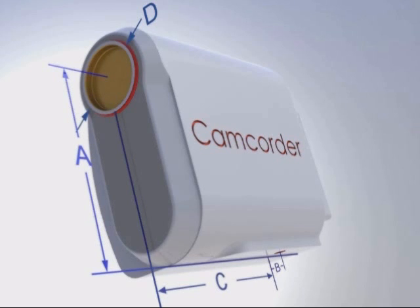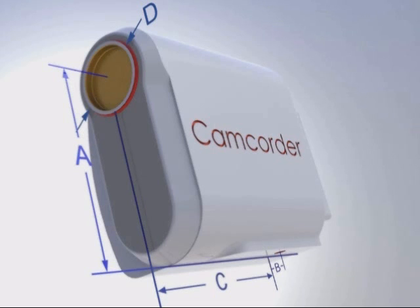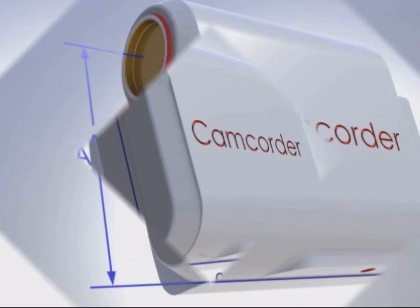To assure the proper fit of your specific camera on the teleprompter, the A, B, C, and D dimensions are required.